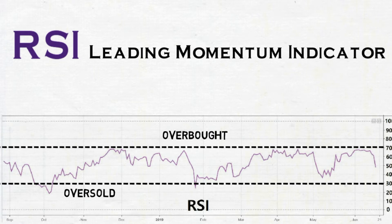You should understand what periods means. Periods means the number of candles considered. If we say 14 period on the daily chart, it means 14 trading days, where each day represents a single candle.